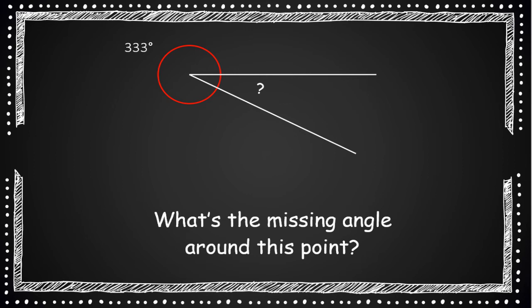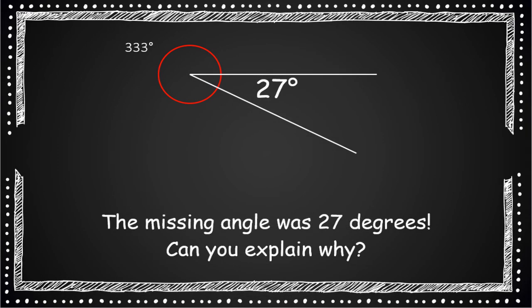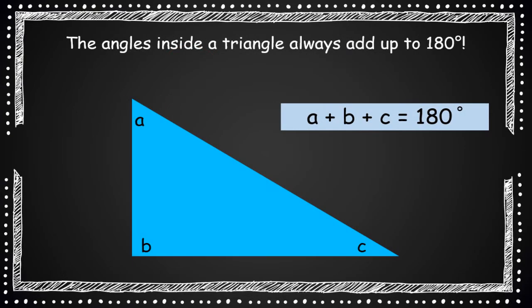What's the missing angle around this point? We already have 333 degrees. Pause the video and give it a try. So you should have got 27 degrees. Can you explain why though?